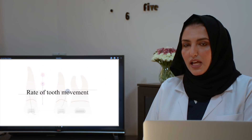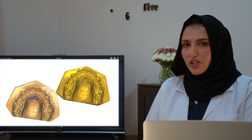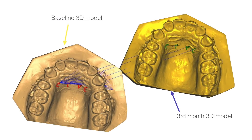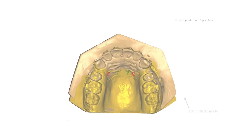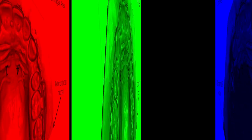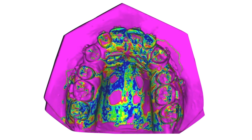To measure the amount of tooth movement we used 3D digital models. At this example we have a baseline and a third-month 3D digital model. We superimposed them on the rugae area at stable points, and then performed a best-fit color matching — blue representing the best match and red representing the worst.